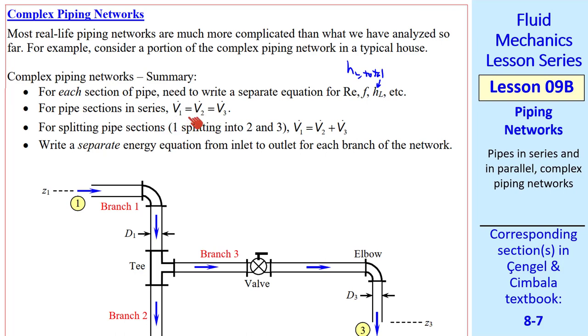In series, the volume flow rates are the same, but if we split one pipe into other sections, volume flow rates have to add up. For pipes with branches, we have to write a separate energy equation from inlet to outlet for each branch.